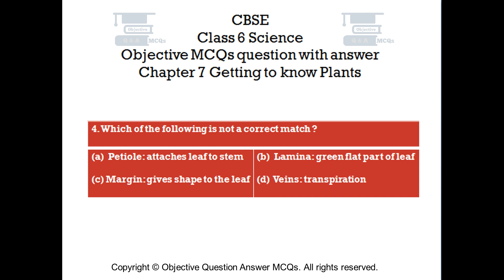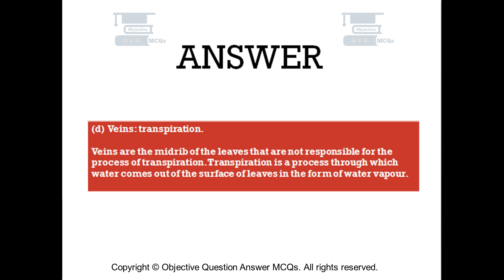The right answer is Option D: Veins — transpiration. Veins are the midrib of the leaves and are not responsible for the process of transpiration. Transpiration is a process through which water comes out of the surface of leaves in the form of water vapor.